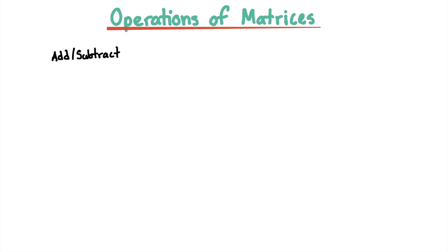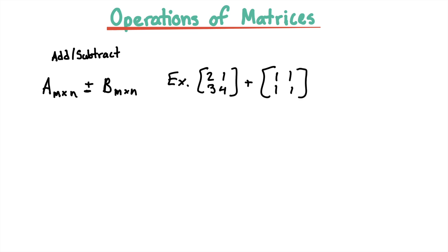We can only add or subtract matrices that are the same shape. So if matrix A has m rows and n columns, we can only add or subtract it with a matrix B that also has the same number of rows and columns. So as an example, this matrix plus this matrix.